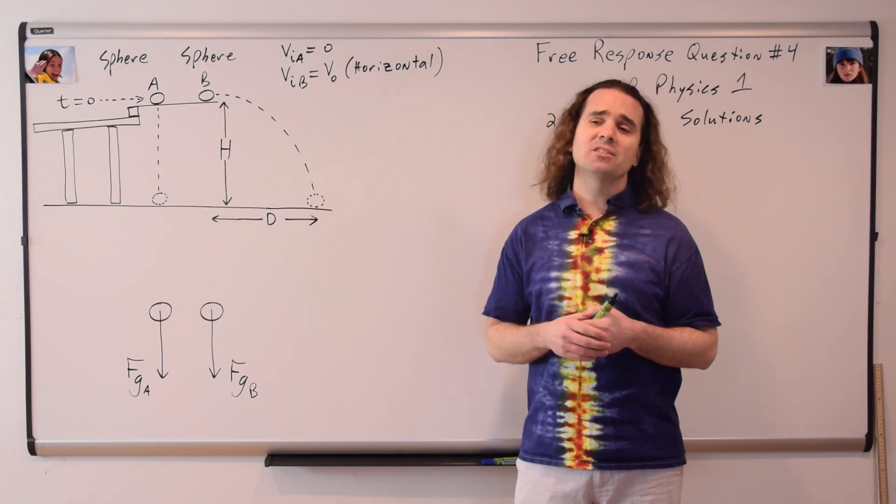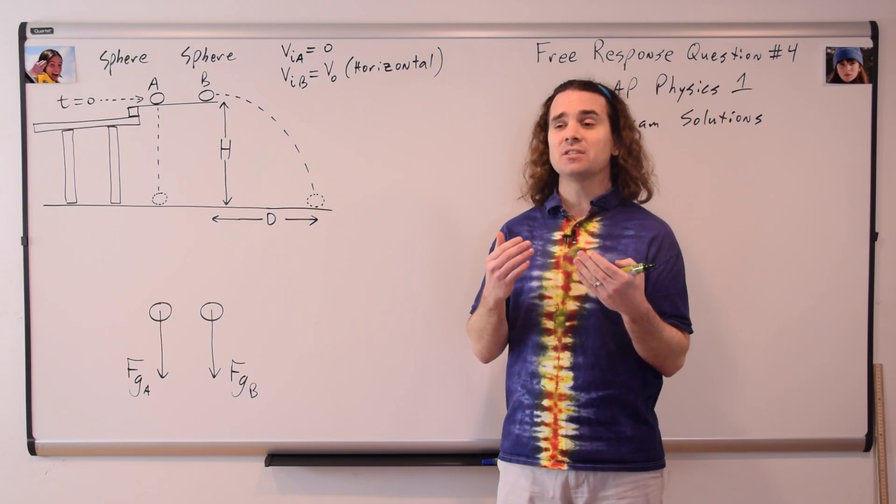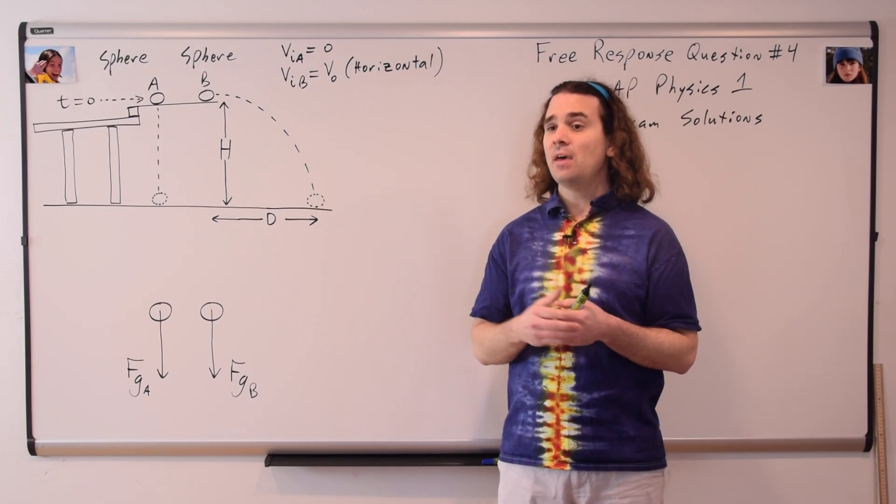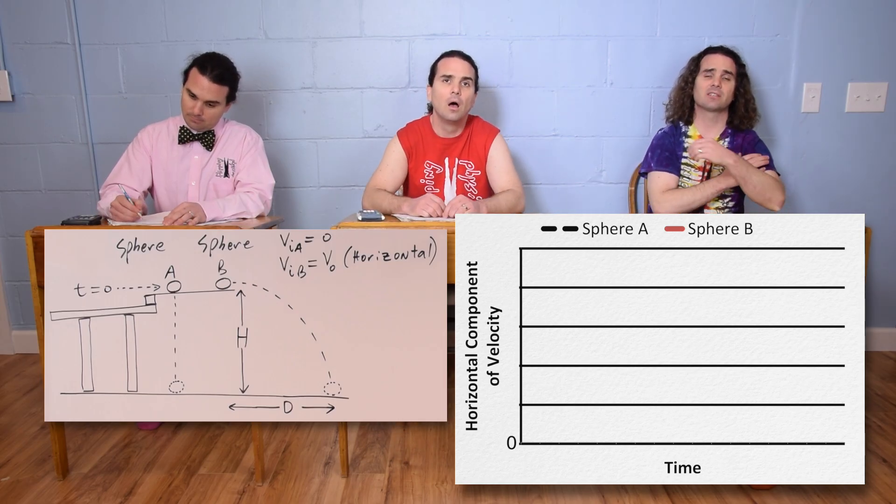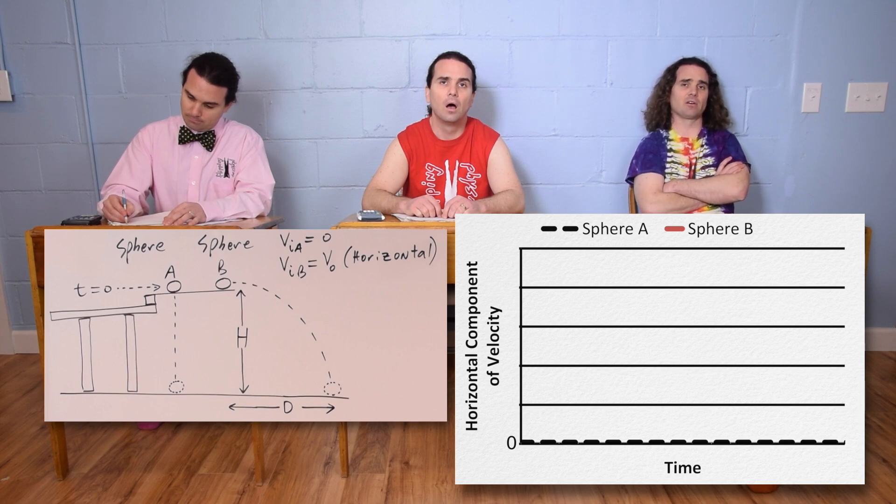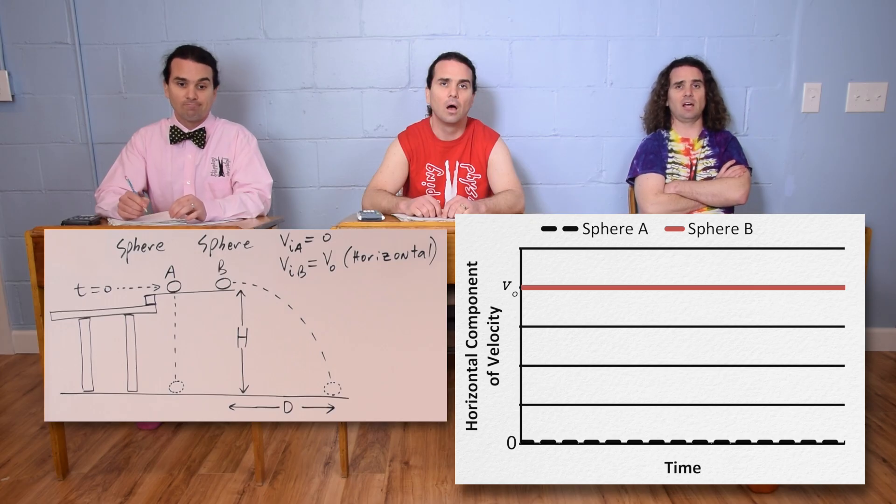Bo, part B asks for a graph of the horizontal components of the velocities of each sphere as a function of time. Could you please do that? Well, sphere A has no velocity in the x direction, so draw a horizontal line at zero, and sphere B has an initial velocity V-naught, which does not change in the x direction, so draw a horizontal line at some positive value and label it V-naught.